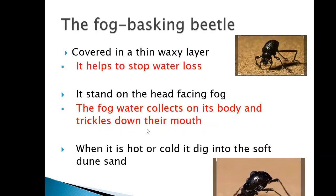Our next animal is the fog basking beetle. This animal is covered in a thin waxy layer — you can see that hard layer here. This layer helps to prevent water loss, so this animal doesn't lose a lot of water, which is important since it lives in the desert.